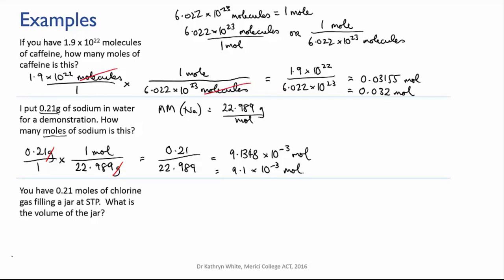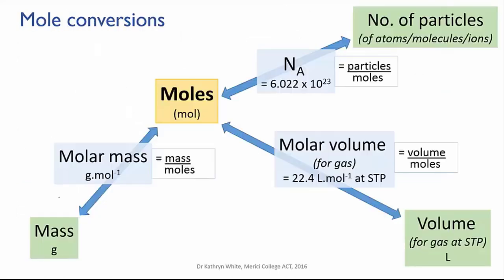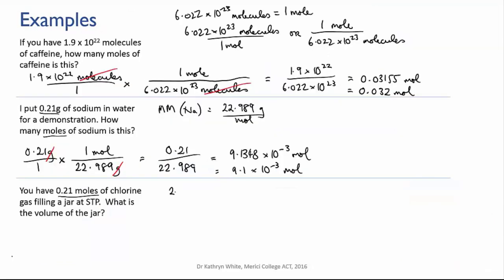Okay, another example. This time, we have 0.21 moles of chlorine gas filling a jar at STP. Remember that's standard temperature and pressure. And we want to know what is the volume of the jar. So this conversion is going from moles of chlorine to volume of chlorine. And the conversion factor that we're going to use is the molar volume, which is 22.4 liters per mole.